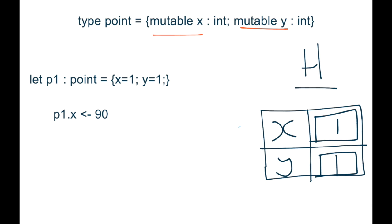It can be changed so that later on in the code when you see something like this, which is saying give p1.x 90, you can, because it's double boxed, go into p1.x on the heap and change that value to be 90.